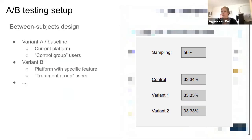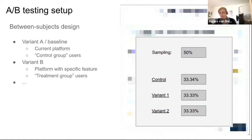An A/B test follows a between-subjects design where you have variant A, also called the baseline or control group, which is your current platform, and variant B, which is the platform with a specific feature such as a new ranking model, also called the treatment group. The screenshot from the framework shows putting 50% of all users into the experiment.